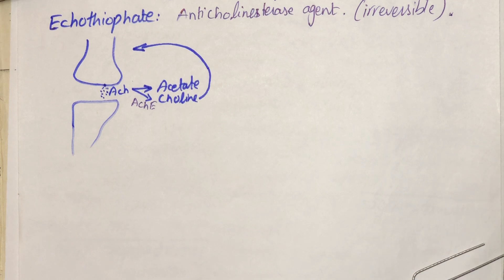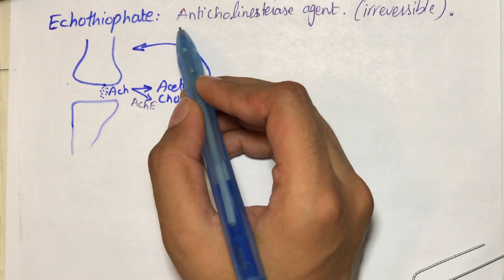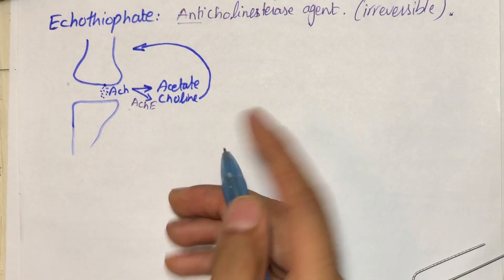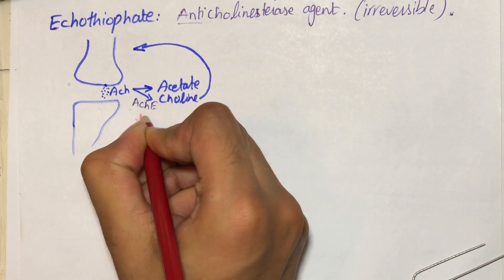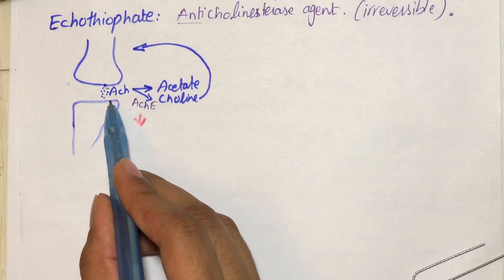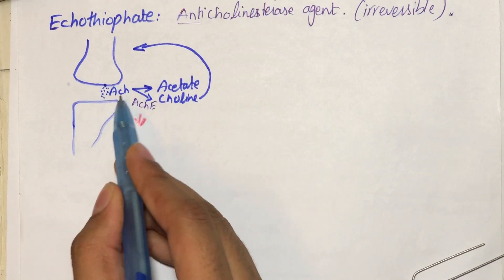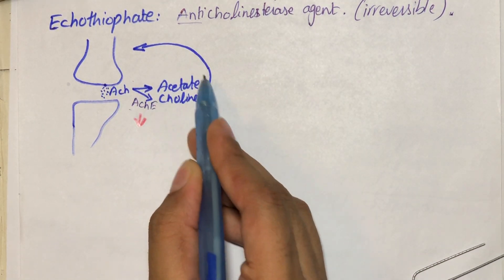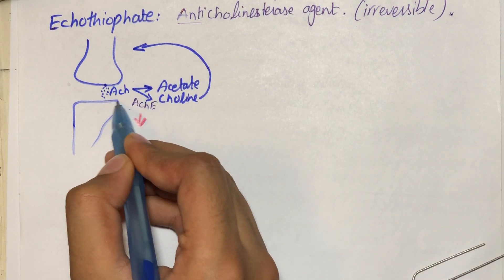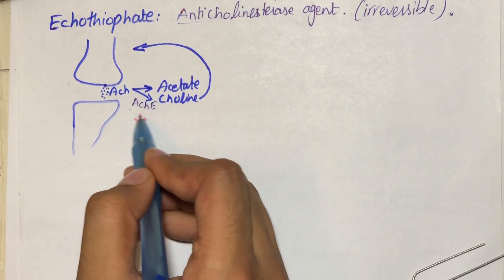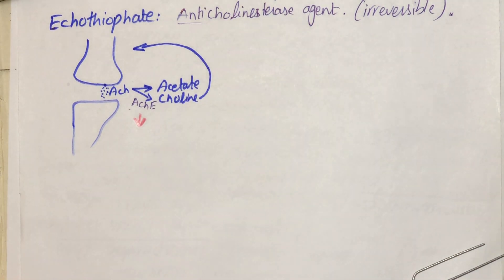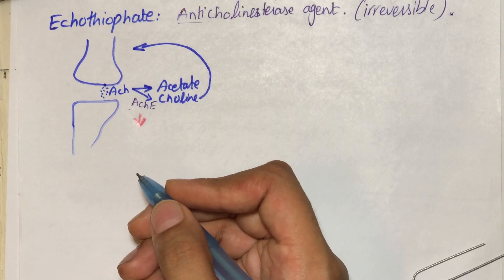When there is presence of acetylcholinesterase, it is decreasing or minimizing the effect of acetylcholine present in the synaptic cleft. But when there is presence of an anti-cholinesterase agent, the activity of this enzyme is reduced. When this activity is reduced, there is an increase in the concentration of acetylcholine in the synaptic cleft, because now acetylcholine is not being degraded. So when there is less acetylcholinesterase, there will be more cholinergic effect.